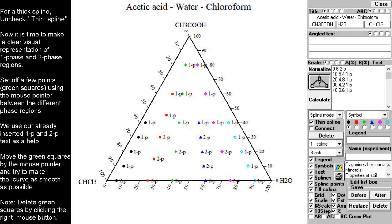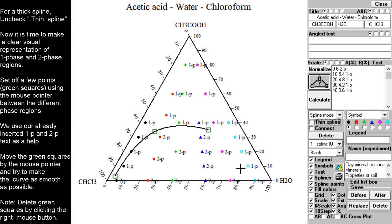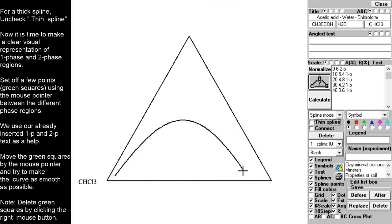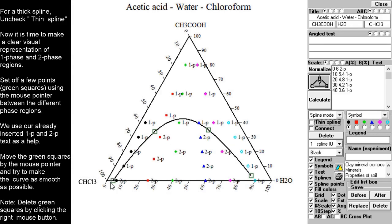We now have all the necessary information we need to draw a border line between the one phase and the two phase region. To do this, set off a few squares with the mouse. Create a curve by moving the squares with the mouse pointer. Use the points located to the left of the 1p or 2p text as a helping guide regarding where to place the spline curve.